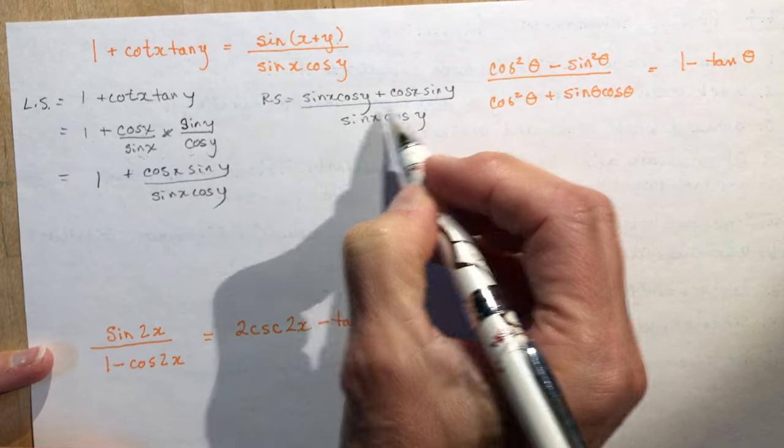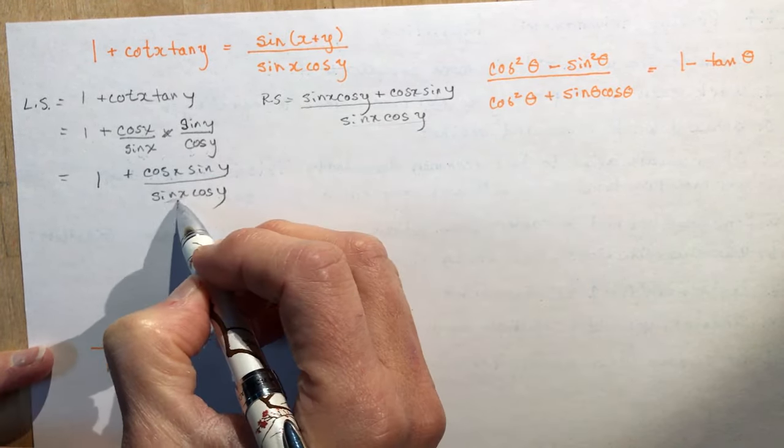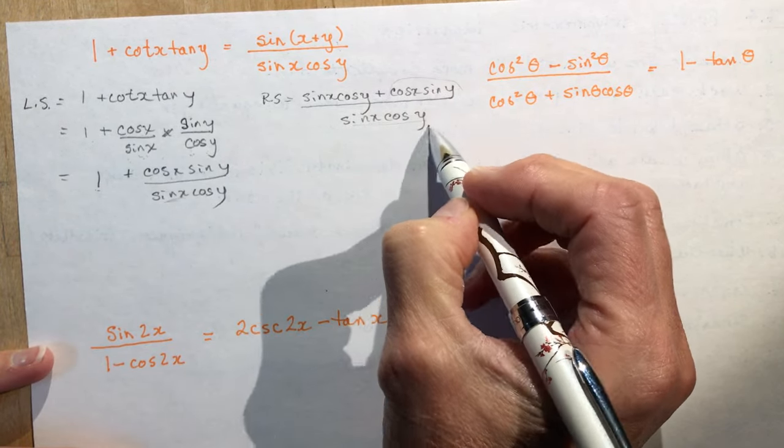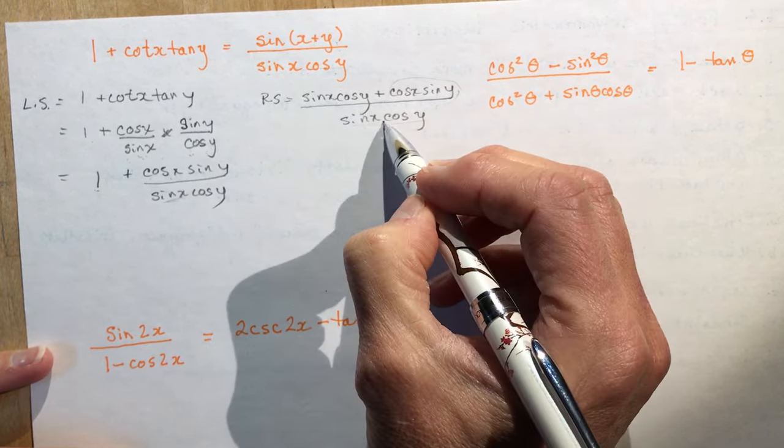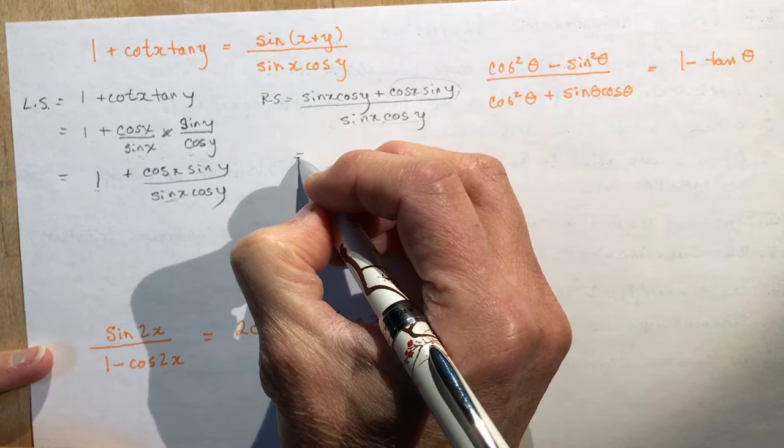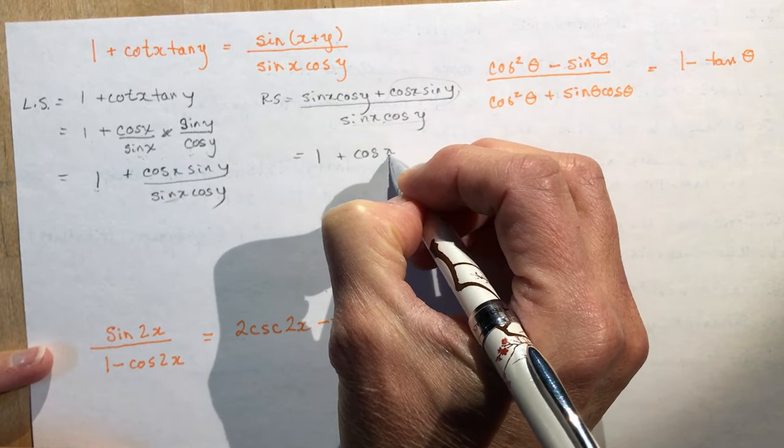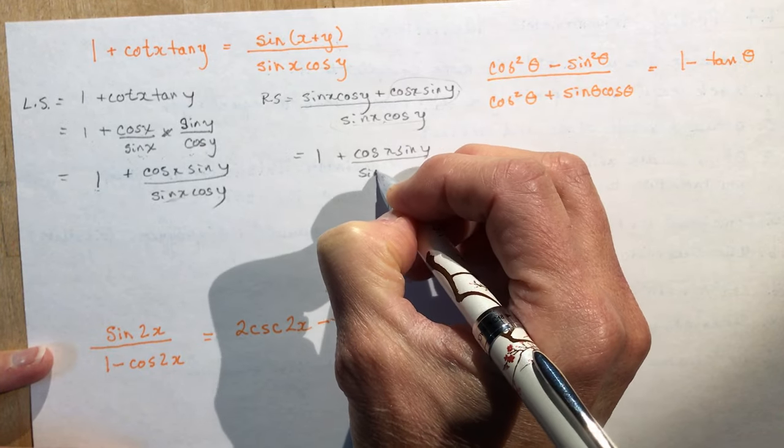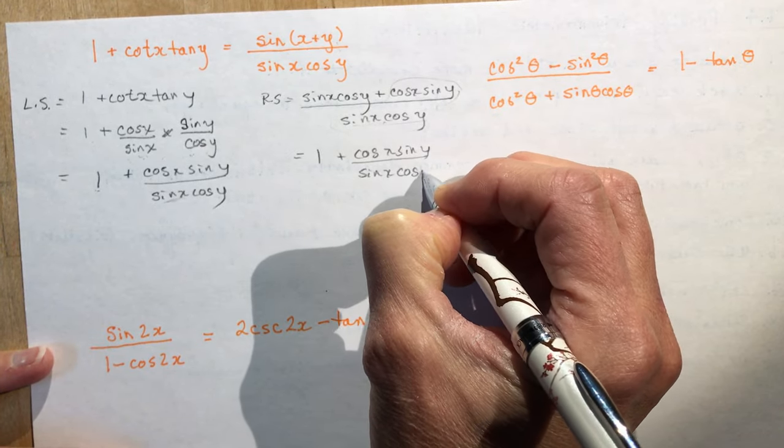So now I'm going to take a look at the other side here. I'm just going to write this like this first: cos x sin y over sin x cos y. And I'm going to compare. What's the same here? Well, I've got the right denominator, but I have this 1 here. And I have this. So look, that's like this. And this one over this is a 1, right? So I have what I need here.